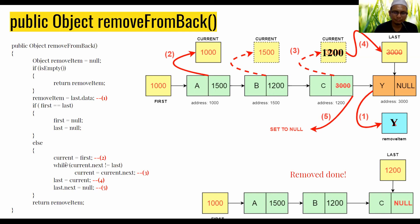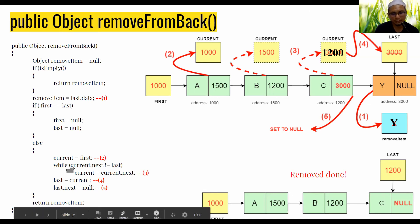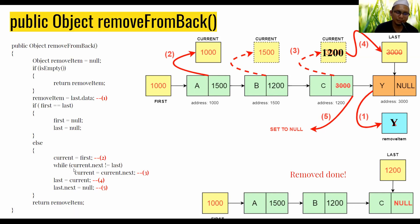We set current to first, then loop with the condition: current.next not equal to last. This means we loop until we reach the second last node — not the last. After reaching the second last, the loop stops and we can get the address of the second last node.